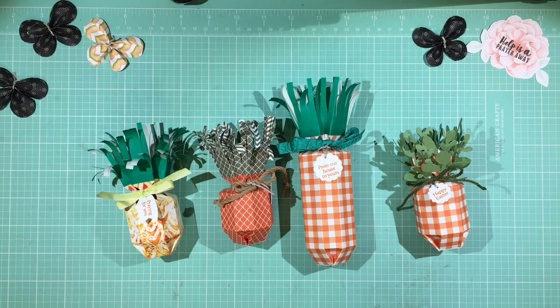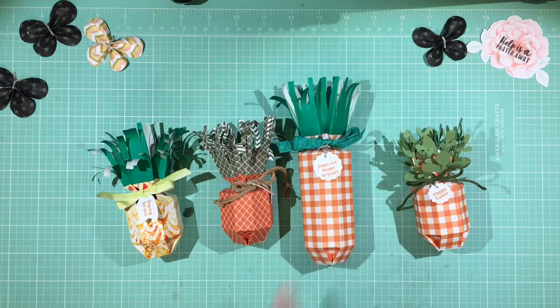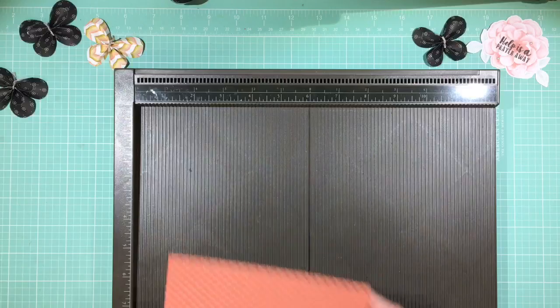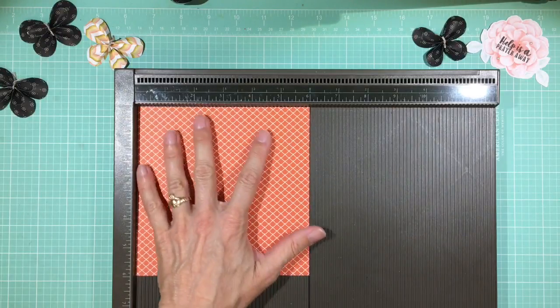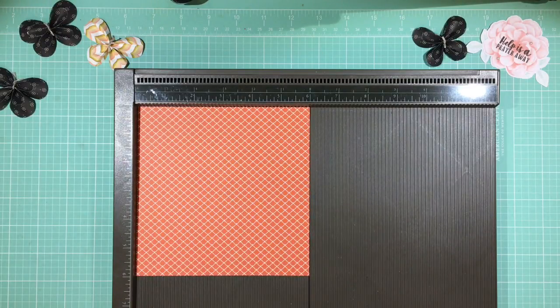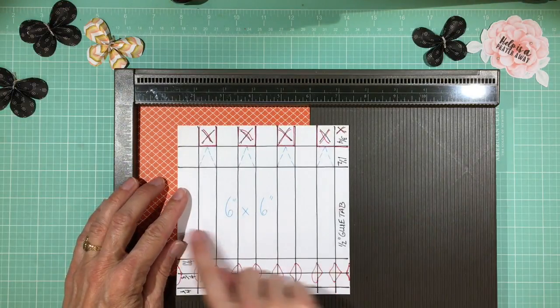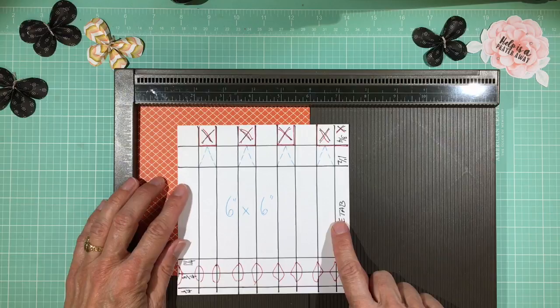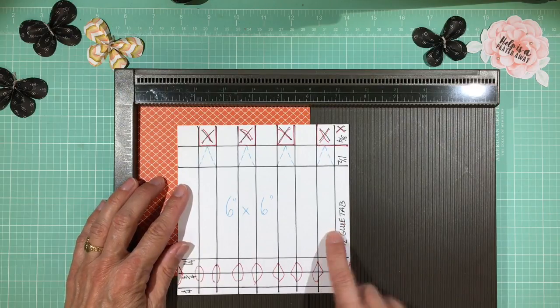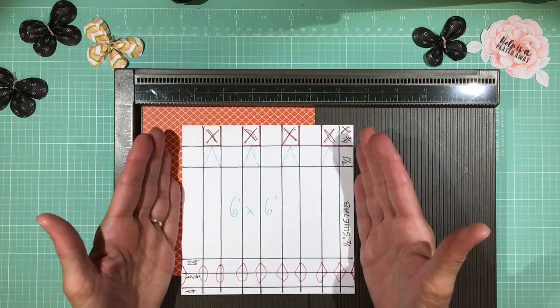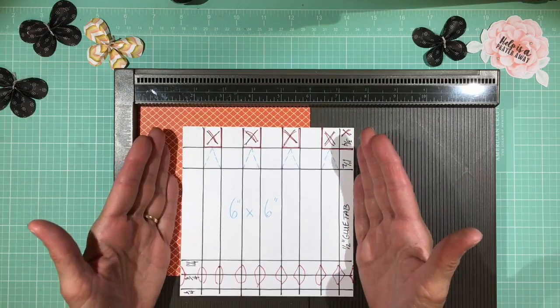And I'm going to use a 6 by 6 inch piece of paper, so we're going to end up one this size. Alright, let's get scoring. This is my 6 by 6 inch piece of paper. And let me show you a template of what we're going for. There are a lot of score lines because we're actually making an octagonal box, so there's going to be eight sides to it.